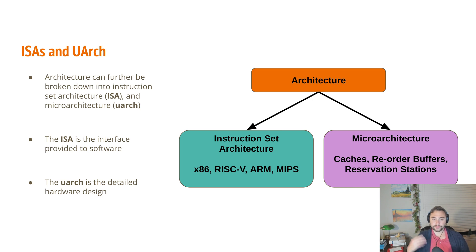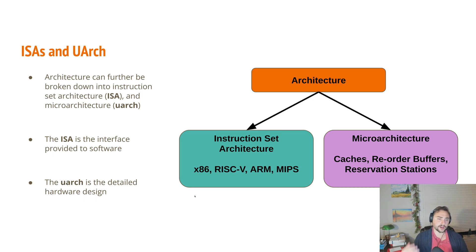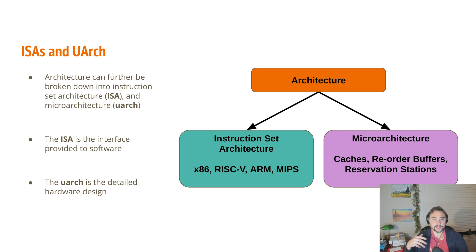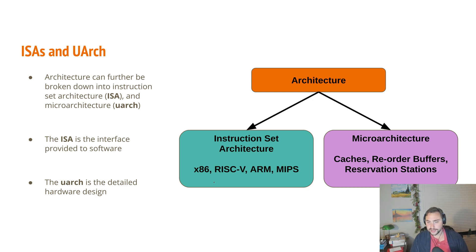Our ISA — our instruction set architecture — is the interface that we're going to provide to software. It's going to be all the instructions that our processor has, as well as things like registers and how our hardware operates. There are many examples of this: the x86 ISA, RISC-V, ARM, and MIPS.